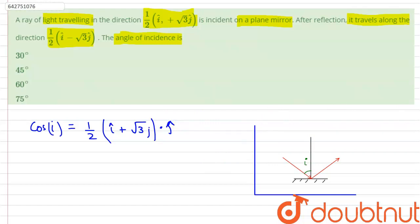On calculating, we can write that i equals cos inverse root 3 by 2. This gives us that i equals 30 degrees.